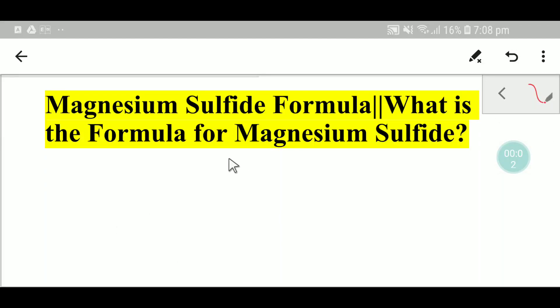Welcome to Chemistry Tutorial 360. Today we are going to write the formula of magnesium sulfate. In magnesium sulfate, we have two parts: the first one is magnesium and the second one is sulfate. The symbol of magnesium is Mg and the symbol of sulfur is S. Magnesium is a metal, so it will release electrons.